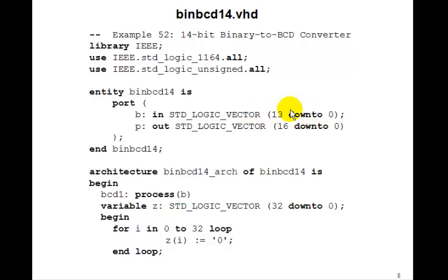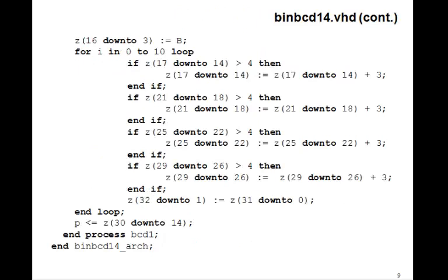B now has to be 14 bits. P is going to be, which is going to contain the BCD numbers, will be 17 bits. And, remember, we initialized the Z to 0. Z has to be 32 down to 0 now. And then, remember, we shifted B three bits to the left. And then we, now we have to go through 11 more times to get to 14.